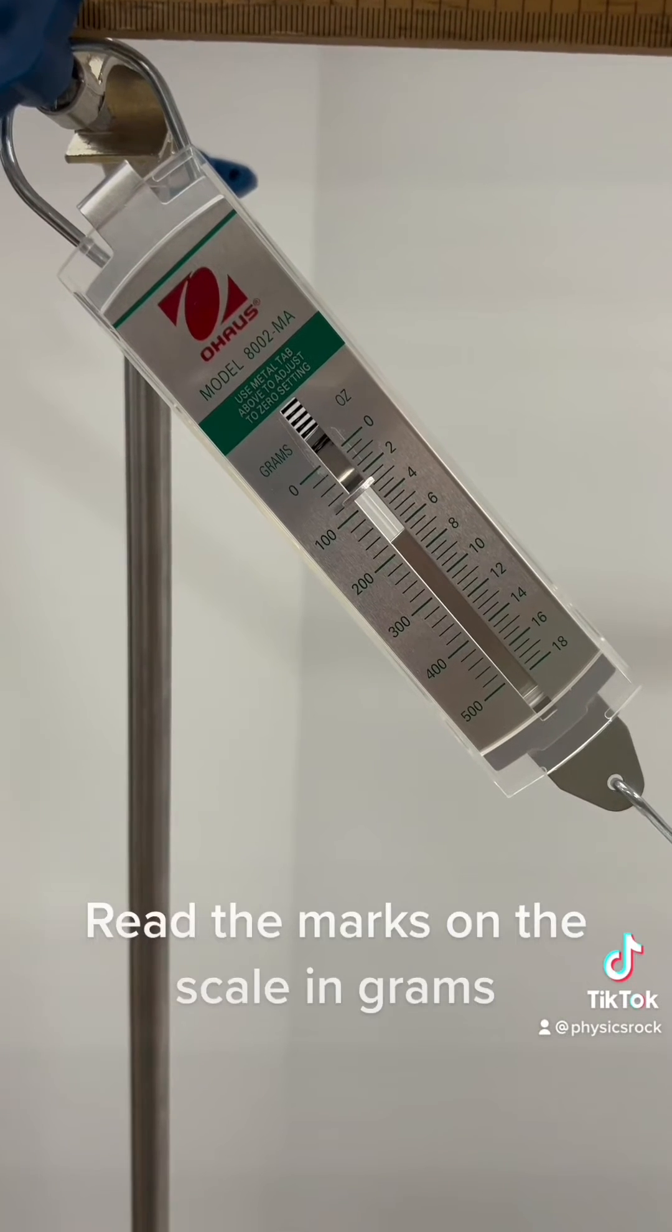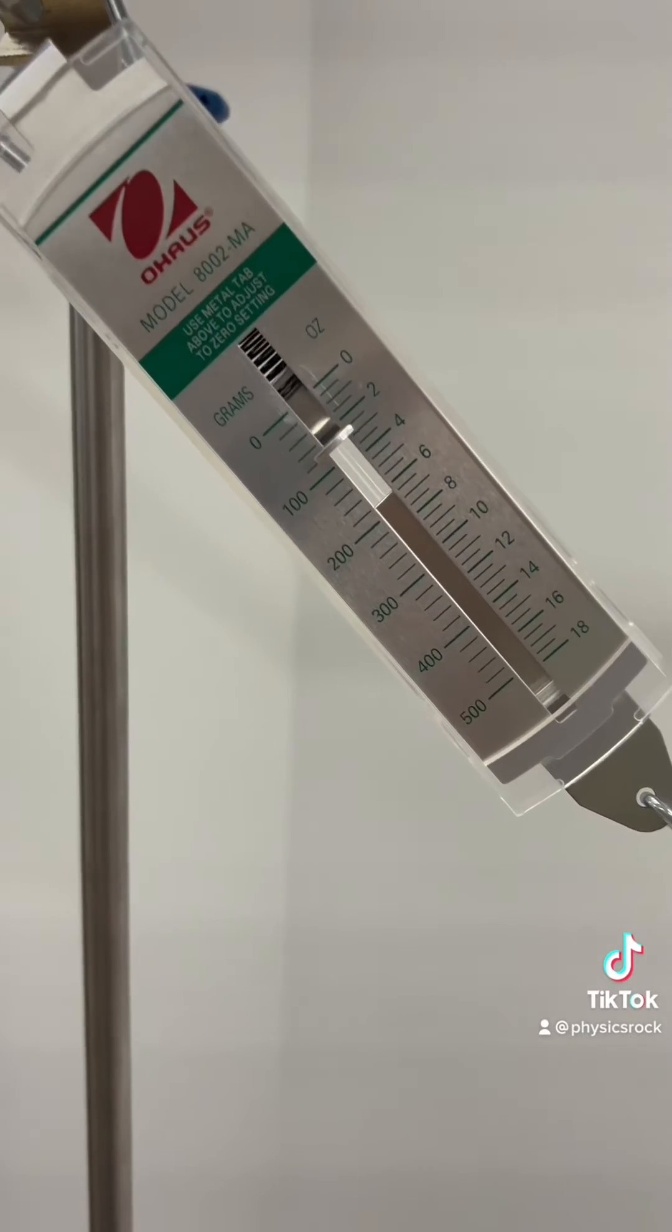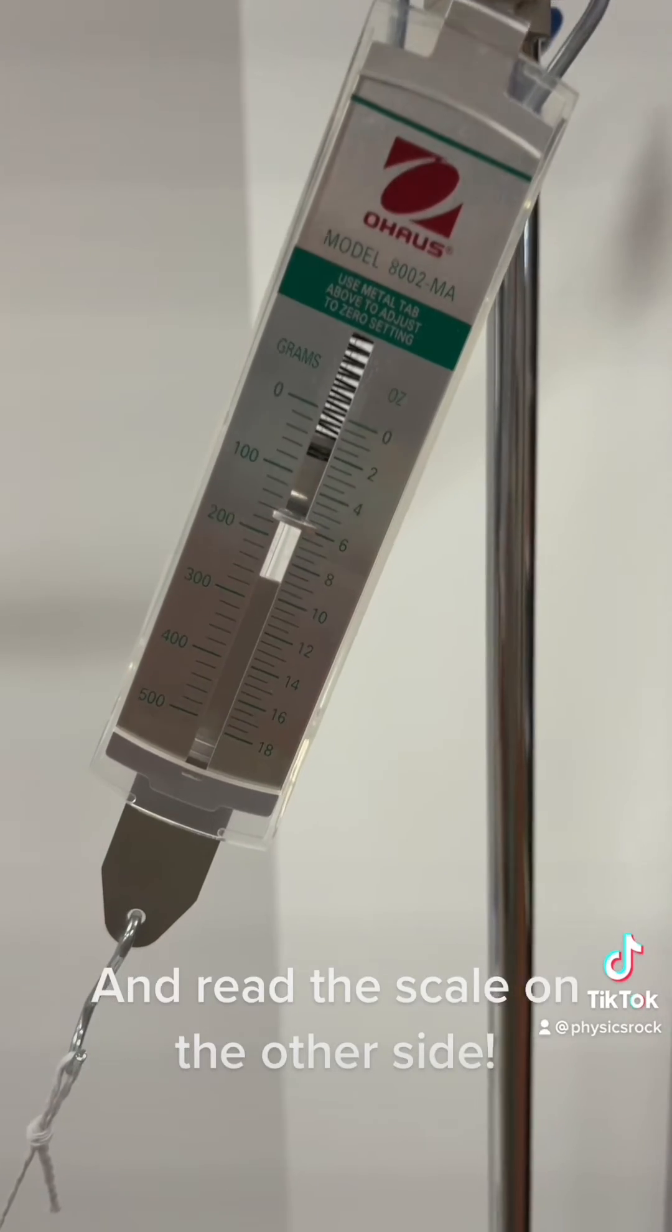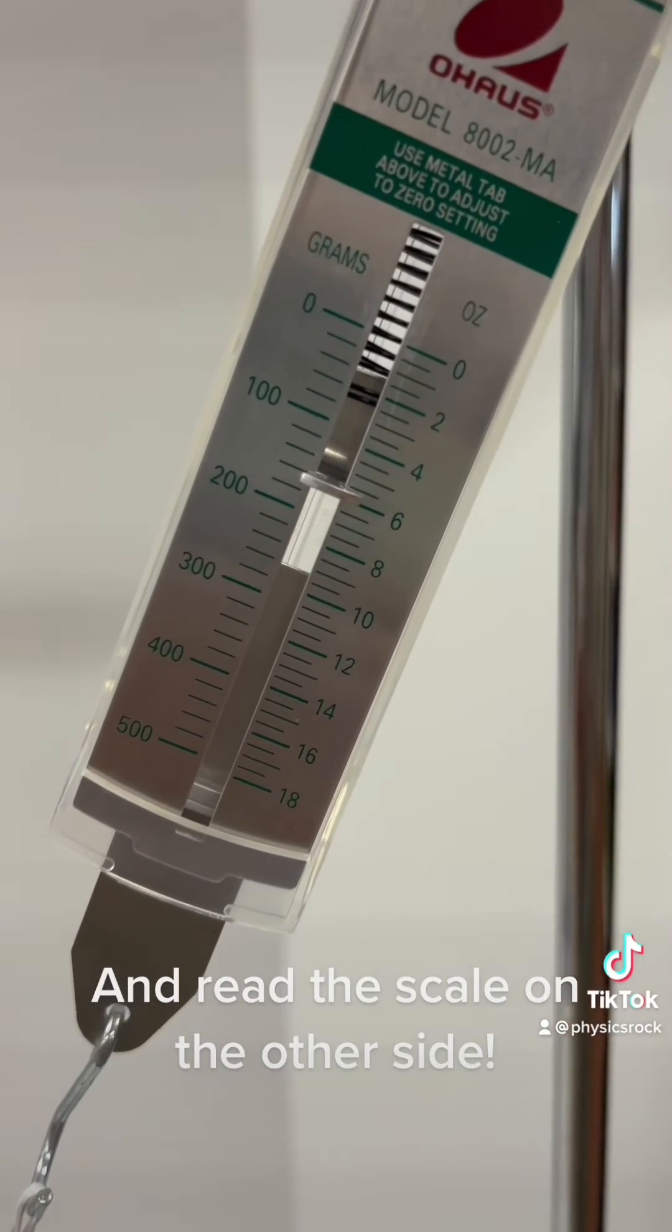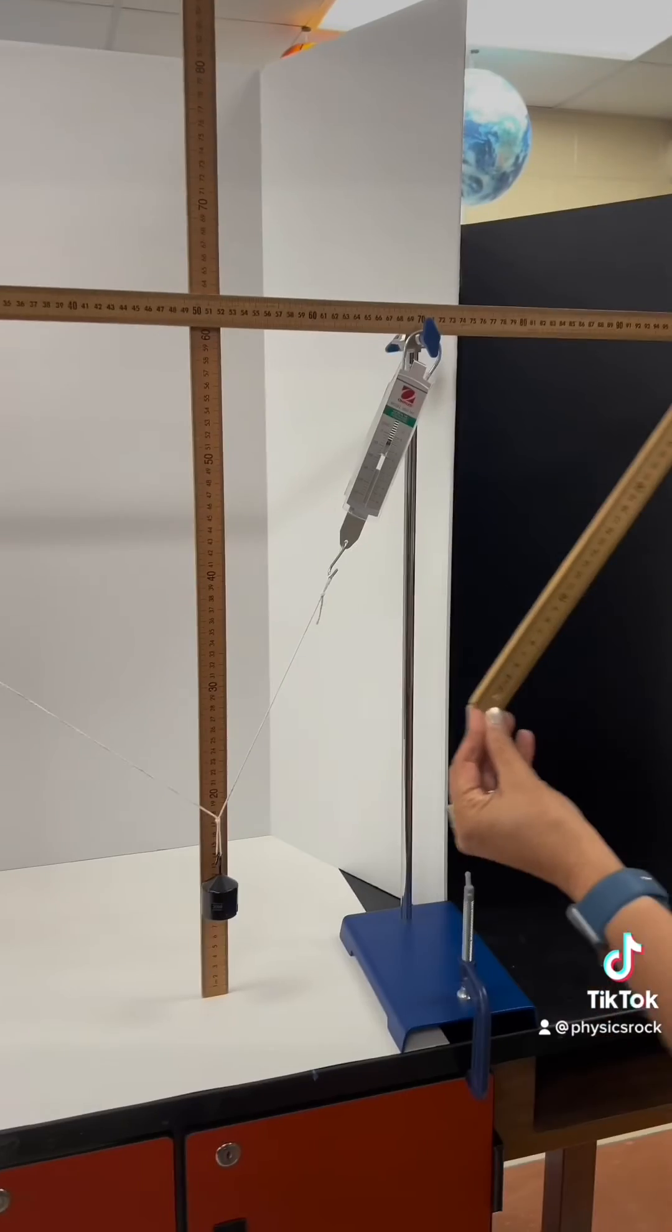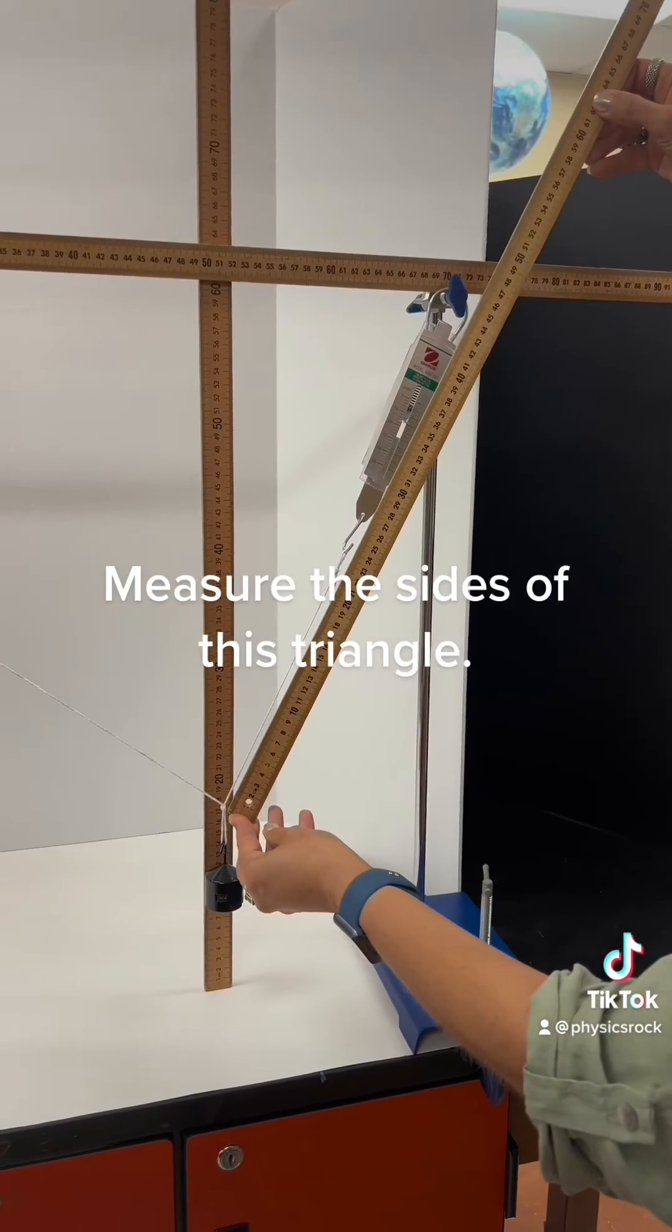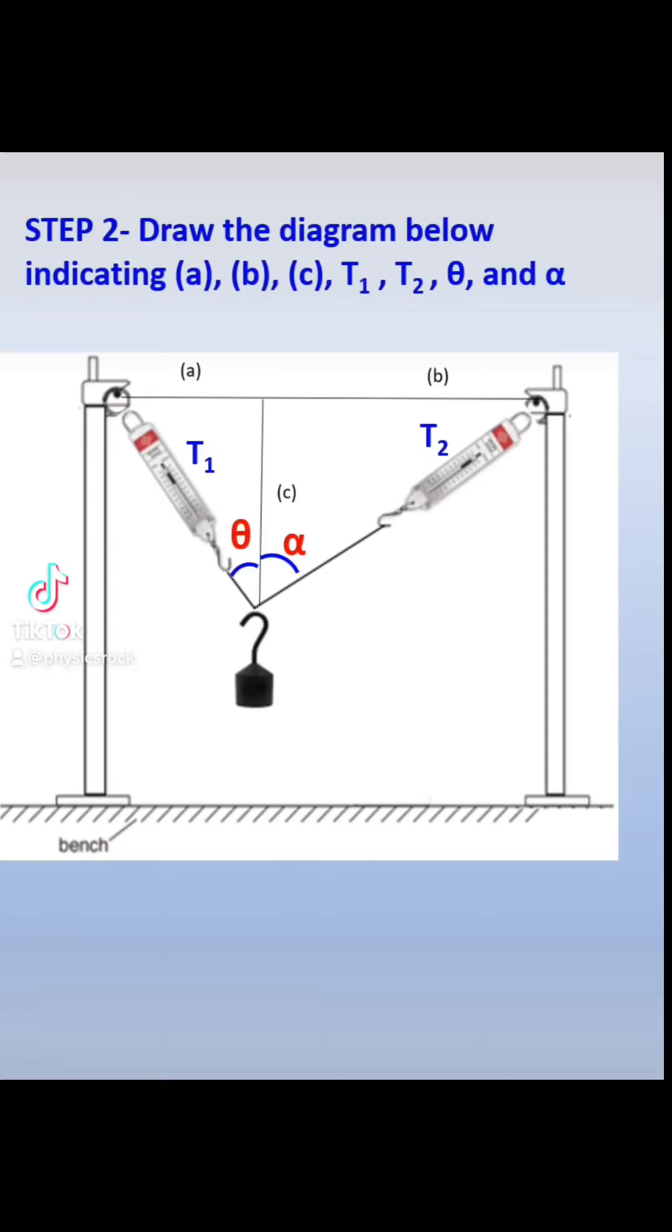Read the marks on the scale in grams, and read the scale on the other side. Measure the sides of this triangle. Draw this diagram and show lengths a, b, c, and angles theta and alpha.